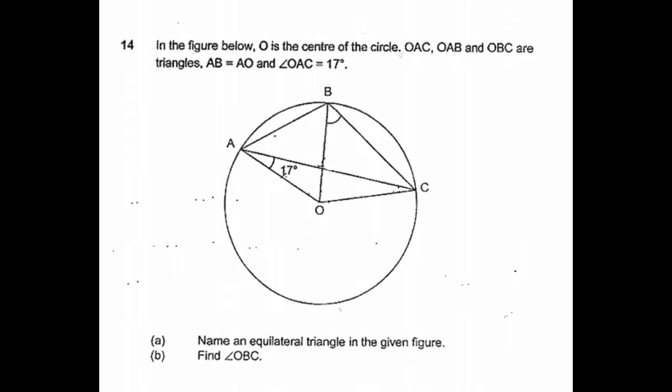In the figure below, O is the center of the circle. OAC, OAB and OBC are triangles. OB is equal to OA. Given the angle OAC is equal to 17 degrees, first part of the question is name an equilateral triangle in the given figure.